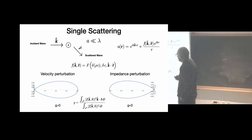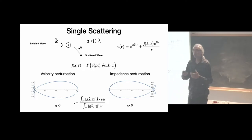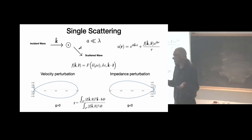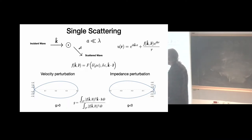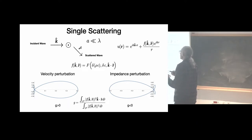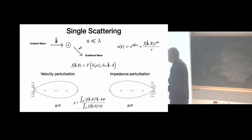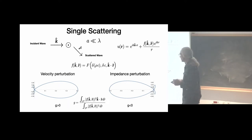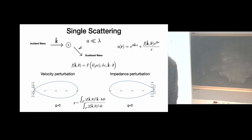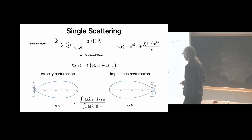I introduce a parameter G to quantify the amount of scattering anisotropy. It is the weighted average of the cosine of the scattering angle, where the weight is the modulus squared of the scattering amplitude — proportional to the energy scattered in direction r. G varies between minus one and one. If scattering is preferentially forward, G is positive; if preferentially backward, G is negative.